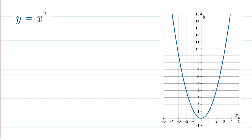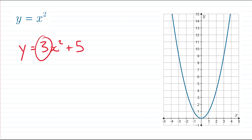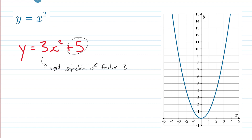Here we have the function y = x² with its graph drawn. We're going to transform it — this time to y = 3x² + 5. We have two transformations occurring here. The 3 causes a vertical stretch of factor 3, and the + 5 is a vertical shift 5 units up.